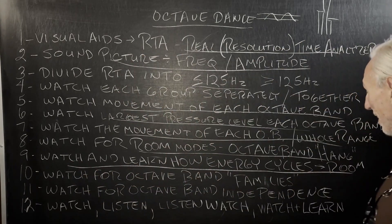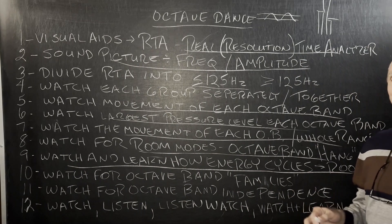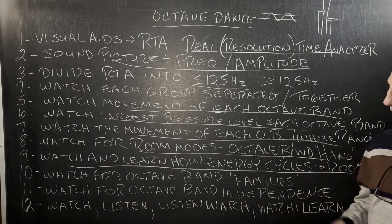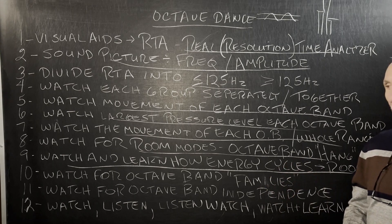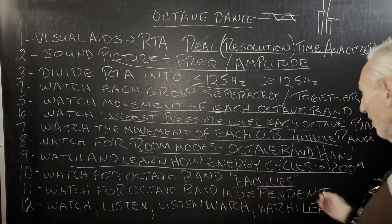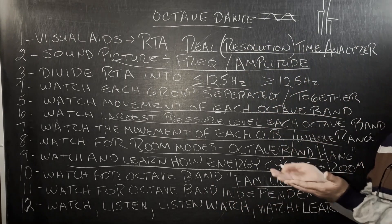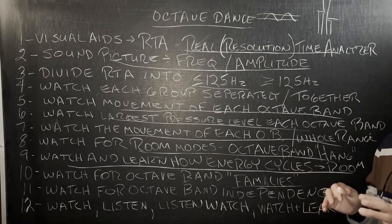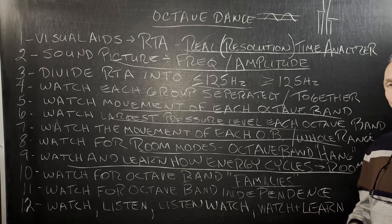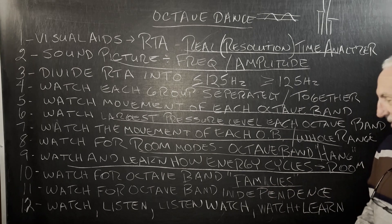Watch and learn how energy cycles throughout the room — the highs, lows, and mids of your favorite songs. Now you're going to be able to see how all that fits together with the RTA. Look at families — look at above 125 Hz and how all the octave bands move together. You'll start to see that below 125 Hz we want them to move separately, and above 125 Hz we want them to move in families. We'll talk about that in another video.